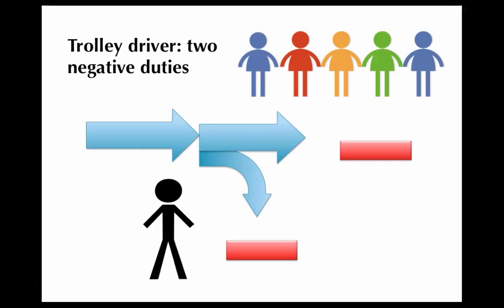In the trolley case, however, the trolley driver is in the unenviable position of having to choose between violating two negative duties. There are no other options. As Foote argues, since in this situation the driver cannot avoid violating a negative duty, it seems clear that he should do the least injury he can, which is to choose to kill one person instead of five.